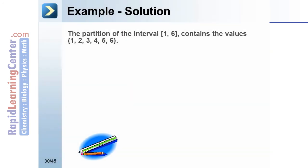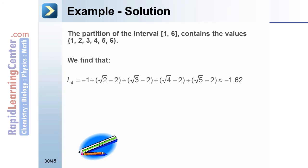Solution. The partition of the interval [1, 6] contains the values 1, 2, 3, 4, 5, and 6. We find that L₅ equals negative 1 plus the square root of (2 minus 2), plus the square root of (3 minus 2), plus the square root of (4 minus 2), plus the square root of (5 minus 2), which is approximately negative 1.62.